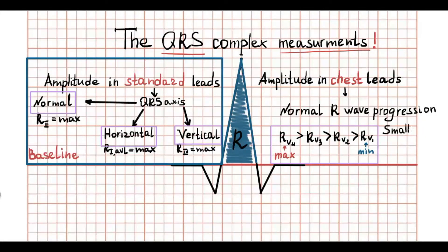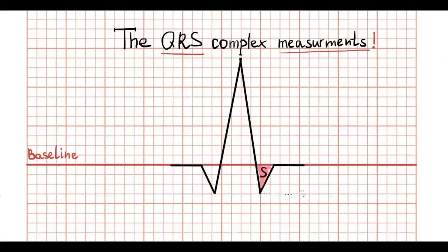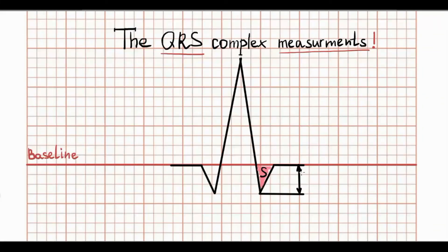Normally, in AVR, R wave can be very small or even absent. Let's go to S wave. The S wave represents depolarization of ventricular basal parts. In amplitude, S wave can be varied and even absent.